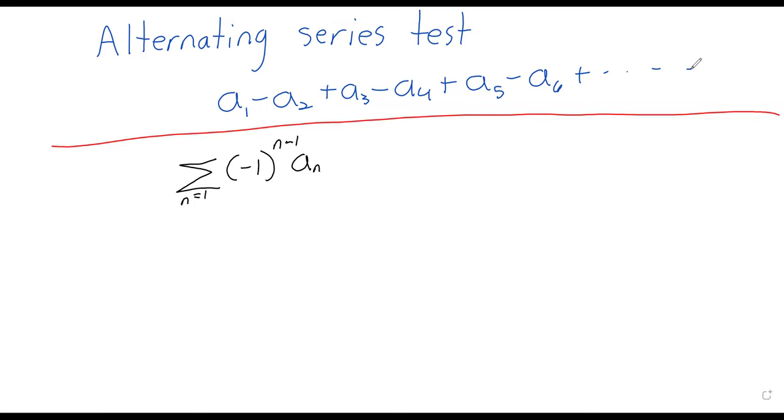Here, this n minus 1 causes us to start with a positive number, because negative 1 to the 0 is positive, whereas just n would cause us to start with a negative number, because negative 1 to the 1st is negative. So we mess around with that power to decide which terms are positive and which are negative, but they're alternating, hence the name.